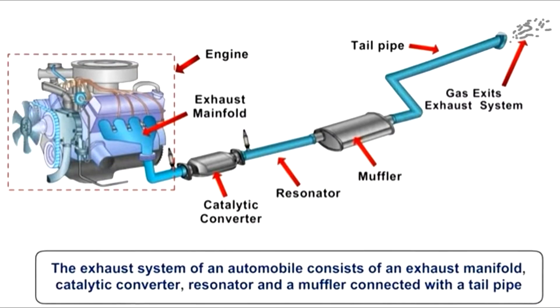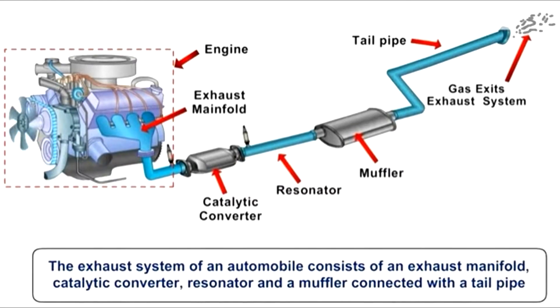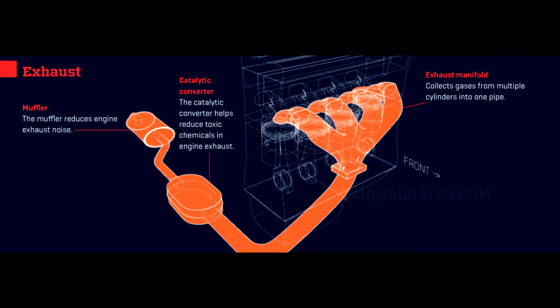Exhaust: the exhaust manifold collects gases from multiple cylinders into one pipe. Exhaust flows through the catalytic converter which captures toxic chemicals in engine exhaust and then out through a muffler that reduces exhaust noise.